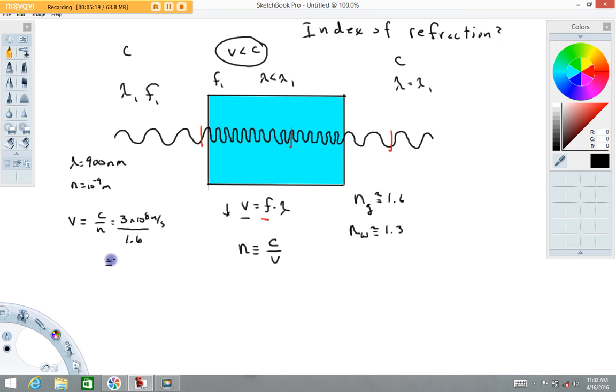Okay, so I get about 1.88, rounding that to two sig figs, times 10 to the eighth meter per second. So there's our new speed, the speed of that wave inside of the glass.